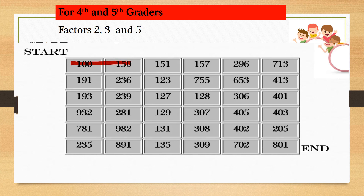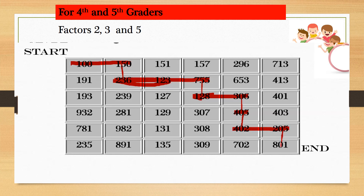100, 150 — which is a multiple of 2 and 5. Then 236, multiple of 2. Then 123, multiple of 3. Then 755, multiple of 5. Then 128, multiple of 2. Then 306, multiple of 3. 405, multiple of 5. 402, multiple of 2. 205, multiple of 5. Ending point: 801, multiple of 3.